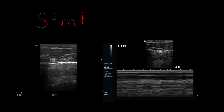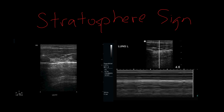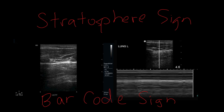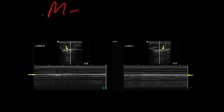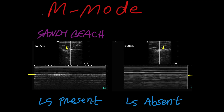This M-mode appearance has been called the stratosphere sign, because of the way linear streams appear as a jet flies through the stratosphere. Others have called it a barcode sign, though with the advent of non-linear two-dimensional barcodes, this could be confusing. Now if we compare the M-mode appearance side by side, it should become more apparent — here, lung sliding is present; here, lung sliding is absent. Here we have the sandy beach appearance, and here we have the stratosphere appearance.